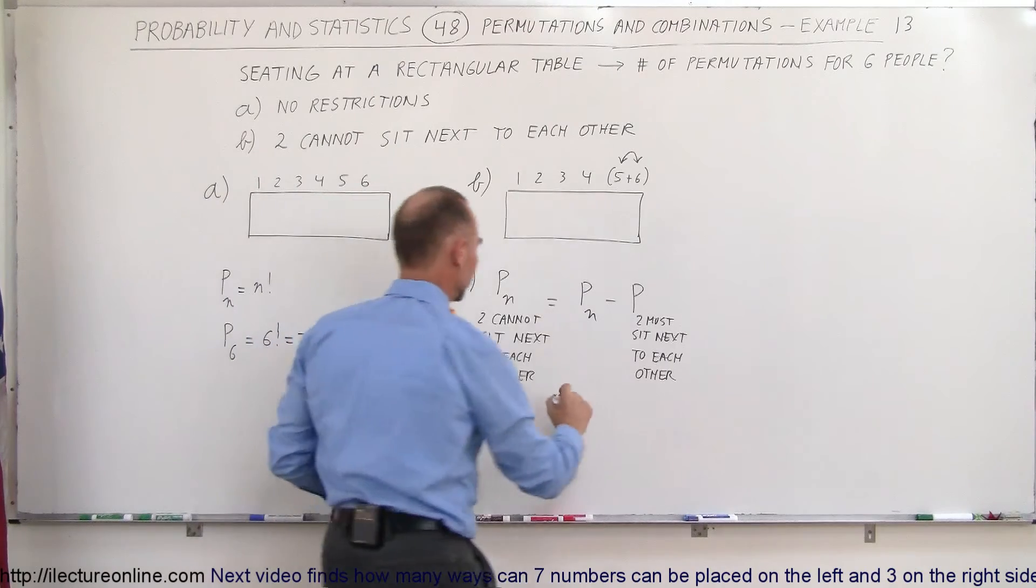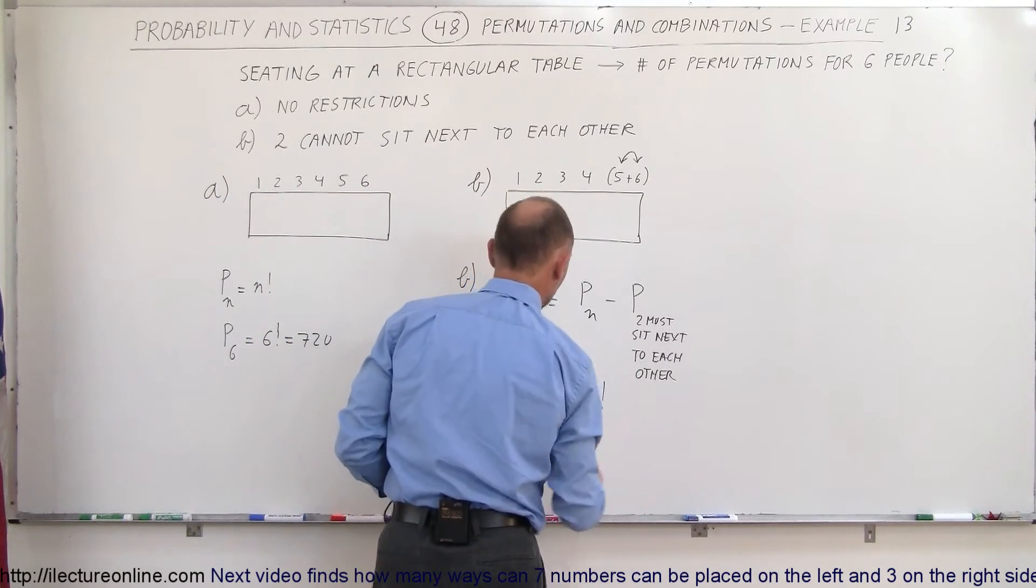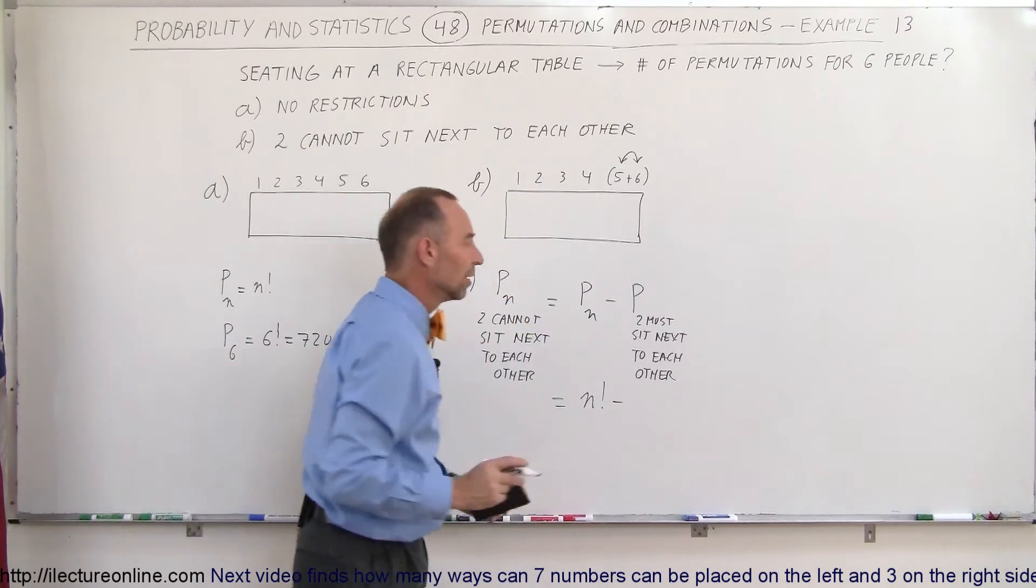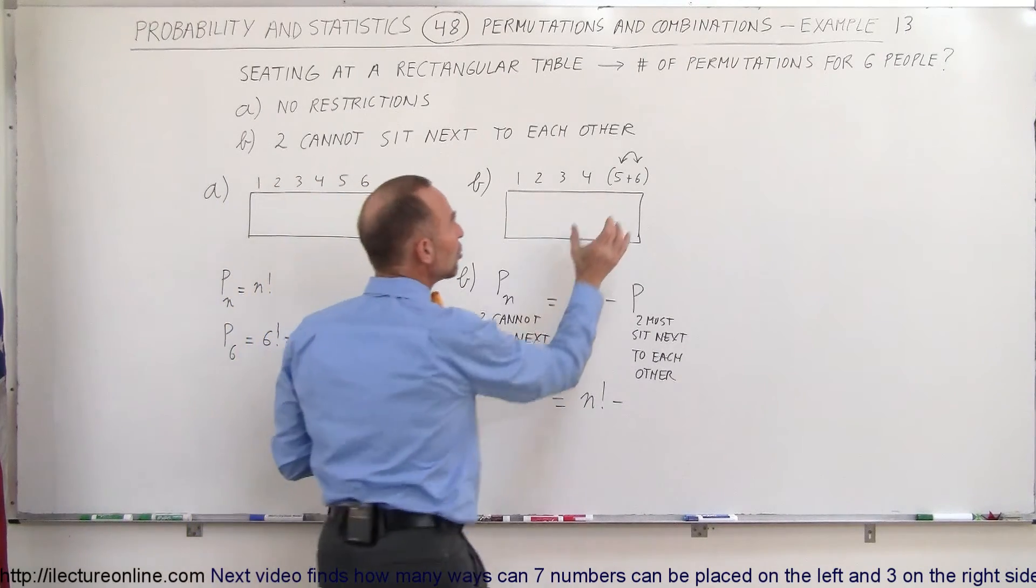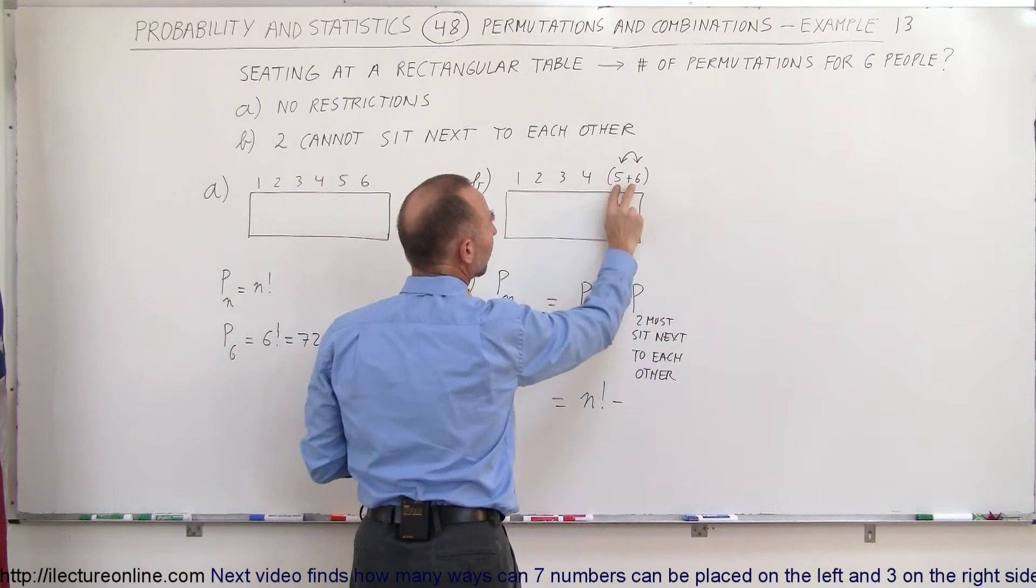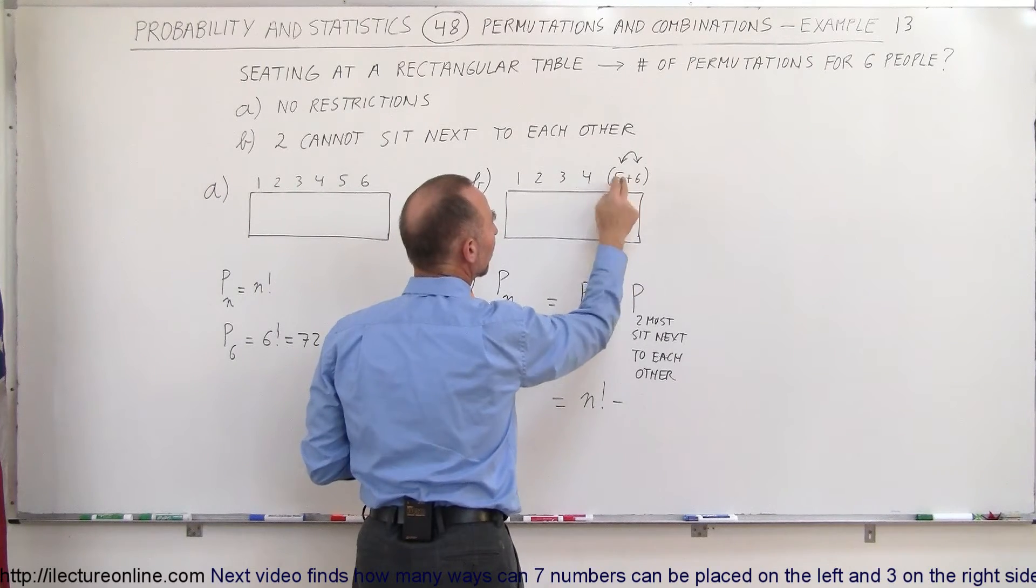This is equal to n factorial minus, now since two people must sit next to each other, that means they form a unit of one equivalent person, but then you have the option to switch those people around.